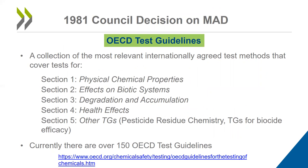One portion of the 1981 council decision on MAD is our OECD test guidelines. There are currently more than 150 OECD test guidelines. These are agreed upon test methods at the international level that cover different properties or endpoints — for example, physical chemical properties, effects on biotic systems, degradation and accumulation, health effects, and also other test guidelines relating to residue chemistry or biocide efficacy.